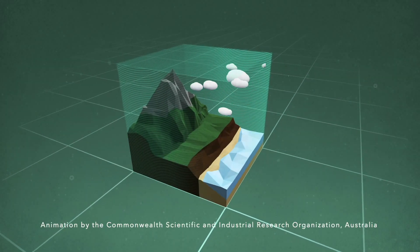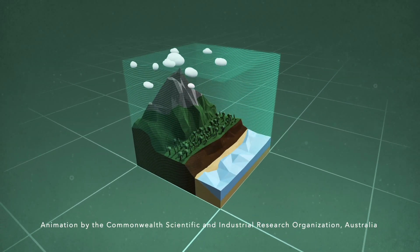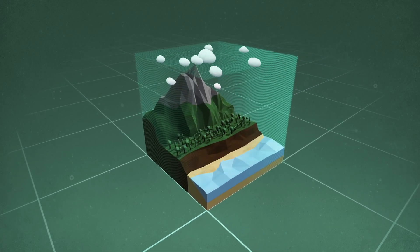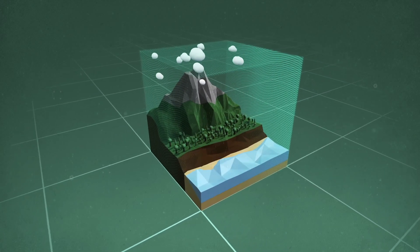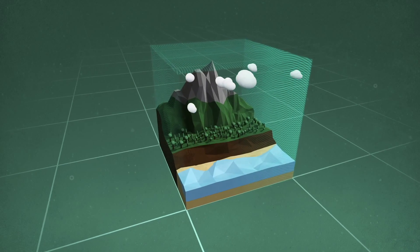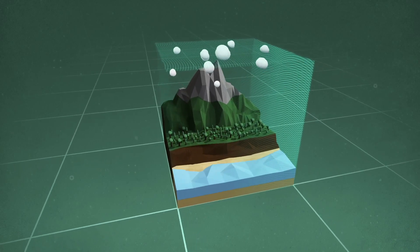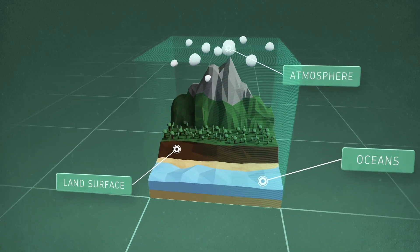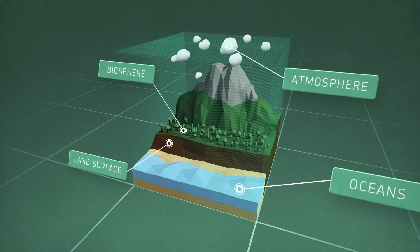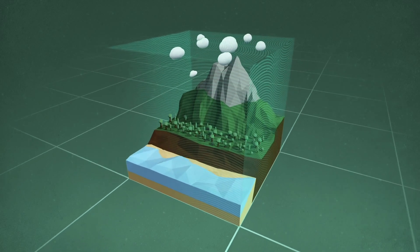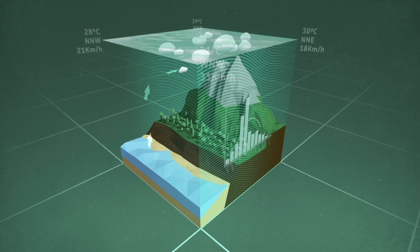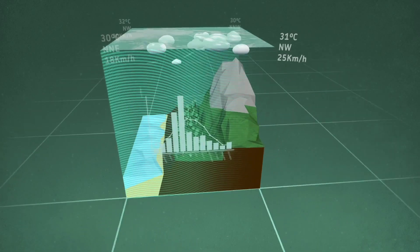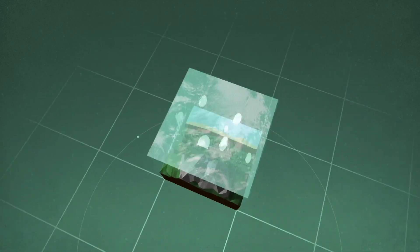So what exactly is a climate model? A climate model is a large collection of computer code that's used to simulate the Earth's system as accurately as possible. The world is broken up into a number of grid cells. Within each grid cell, the model simulates the ocean, the atmosphere, the biosphere, and the land surface, and then combines all these aspects together.